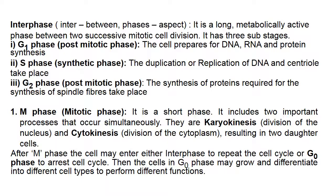M phase, the mitotic phase, is a short phase that includes two processes: karyokinesis (division of the nucleus) and cytokinesis (division of cytoplasm), resulting in two daughter cells. After M phase, the cell may enter either interphase to repeat the cell cycle or G0 phase to arrest the cell cycle. Cells in G0 phase may grow and differentiate into different cell types. In tissue cultures, three processes are important: differentiation, dedifferentiation, and redifferentiation, all associated with transitions between G0 and G1 phases.